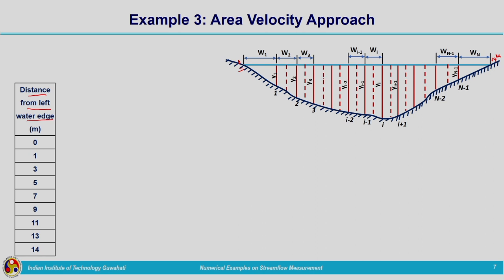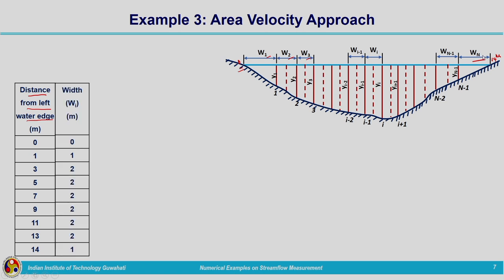As shown in the figure, we divide the cross section into different strips with widths W1, W2, W3 up to Wn. The first strip from 0 to 1 has width 1 meter; from 1 to 3, width is 2 meters; from 3 to 5, width is 2 meters; from 5 to 7, width is 2 meters. At the last point near the right bank, 14 minus 13 gives a width of 1 meter. Each width is tabulated accordingly.